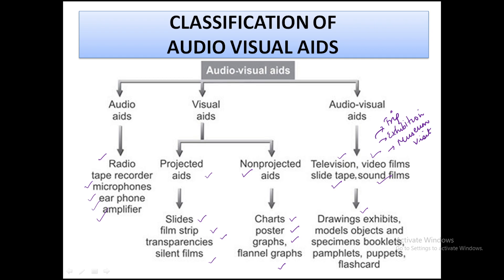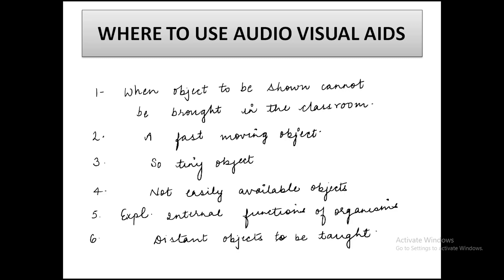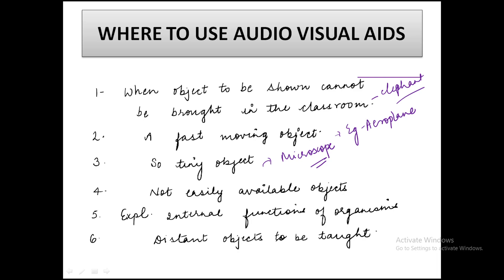Now, where and why should audio-visual aids be used? When the object to be shown cannot be brought into the classroom — for example, we want to teach 'E for elephant' but we cannot bring an elephant — we put up a picture. For a fast-moving object like an aeroplane, we put up a picture, video, or similar resource. For tiny objects that cannot be seen by the naked eye, we use microscope diagrams. For not easily available objects, such as old coins, we can create models or dummies. For explaining internal functions of an organism, such as the digestive system, we can use a model.